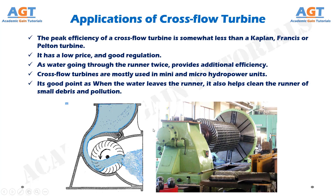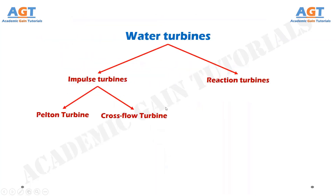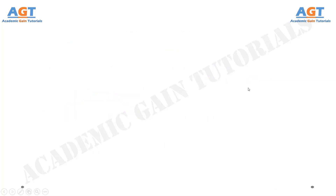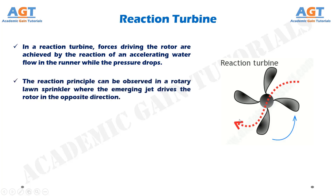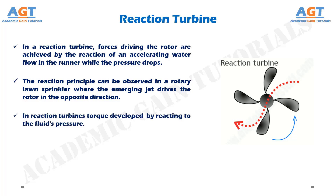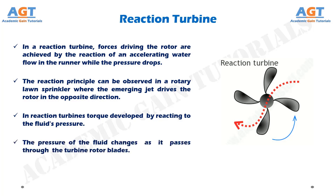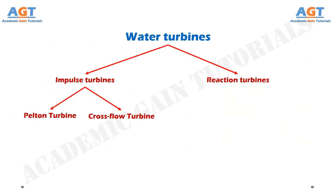We have studied the impulse turbines. Now let's look at reaction turbines. In a reaction turbine, the forces driving the rotor are achieved by the reaction of an accelerating water flow in the runner while the pressure drops. The reaction principle can be observed in a rotary lawn sprinkler where the emerging jet drives the rotor in the opposite direction. In reaction turbines, torque is developed by reacting to the fluid's pressure. The pressure of the fluid changes as it passes through the turbine rotor blades. The reaction turbines are of three types.